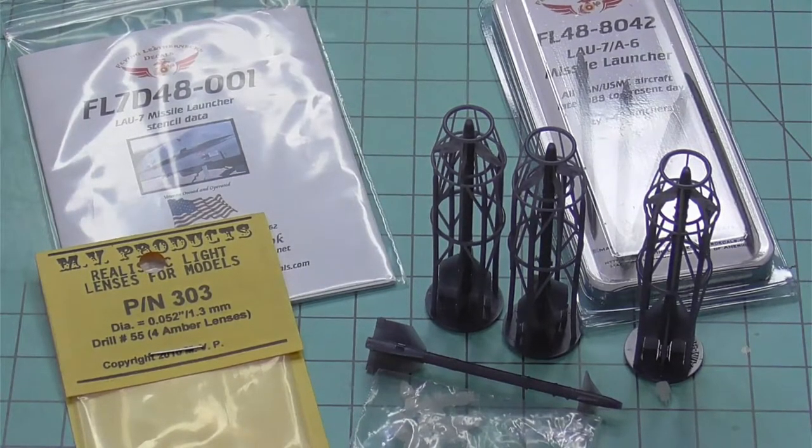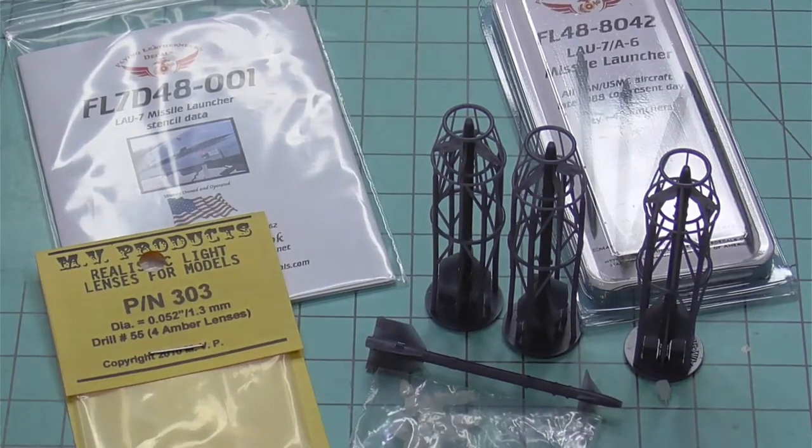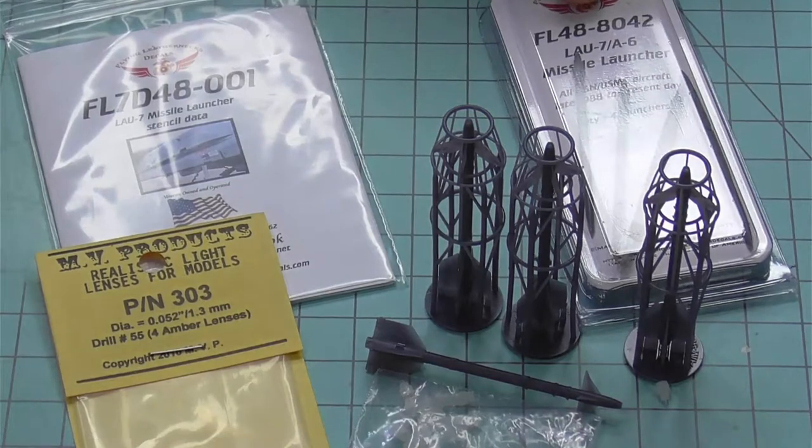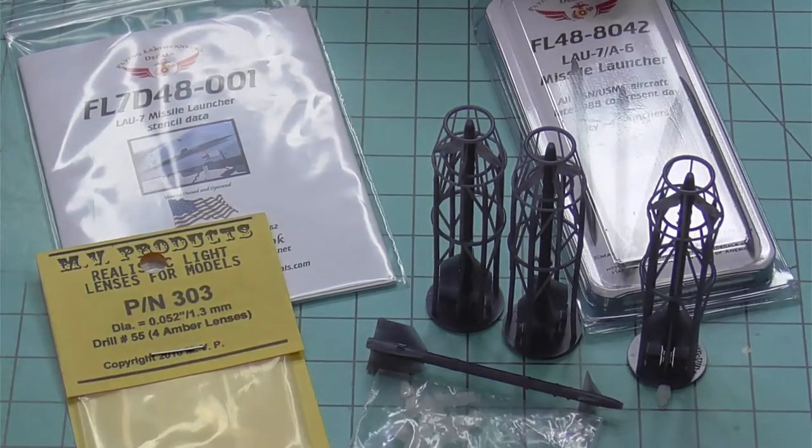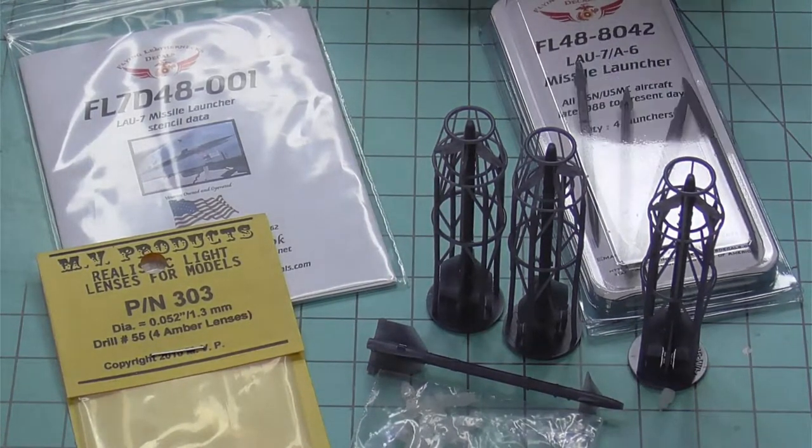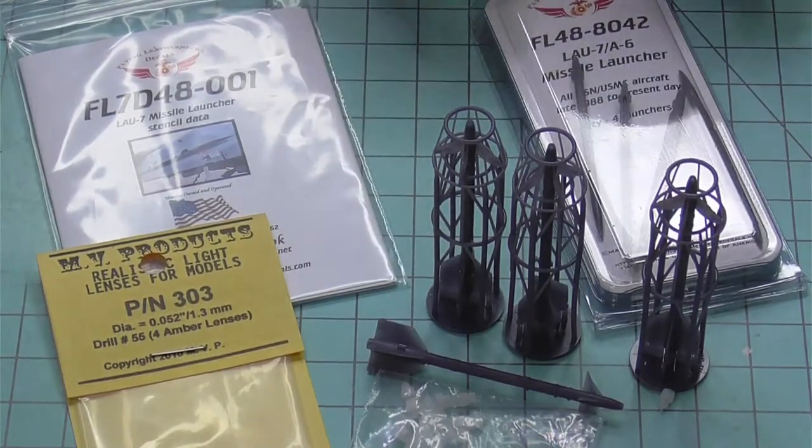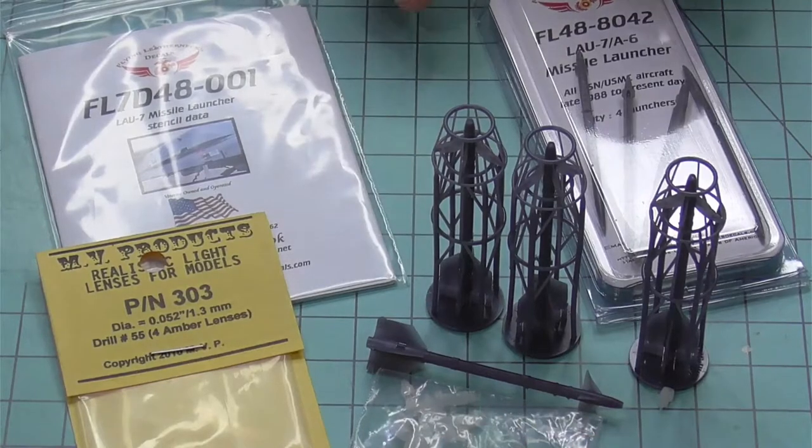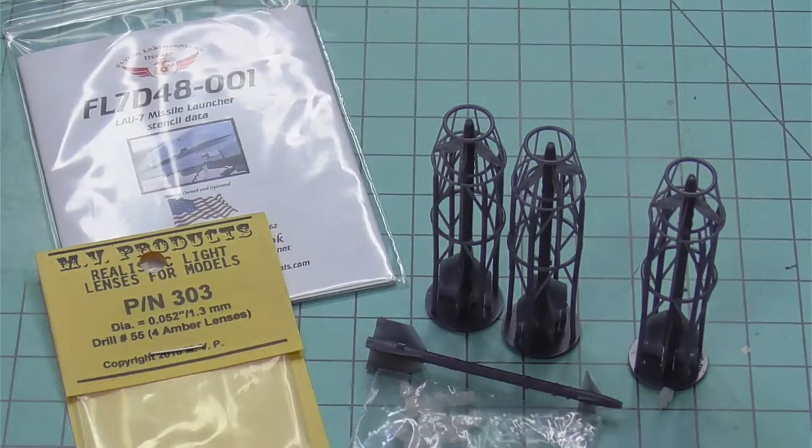What we've got here in front of us is the Flying Leatherneck LAU-7 A-6 missile launchers. Keep in mind that we do have several sets of LAU-7s, and I chose this one simply because that's the one I chose. We'll set those aside for now.